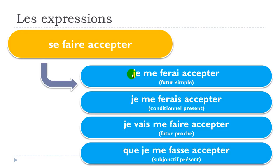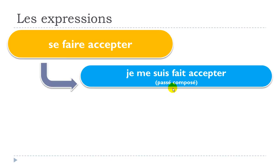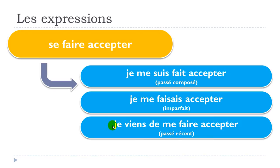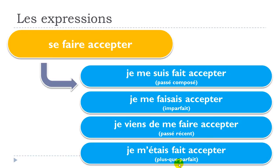Now four past tenses. Passé composé: 'je me suis fait accepter'. Imparfait: 'je me faisais accepter'. Passé récent: 'je viens de me faire accepter'. Plus-que-parfait: 'je m'étais fait accepter'.